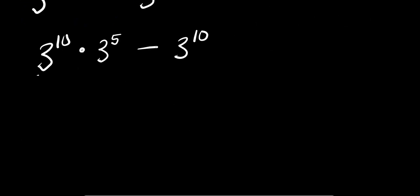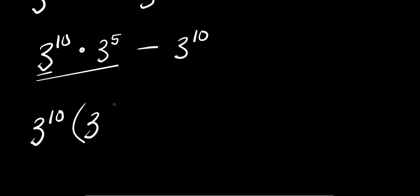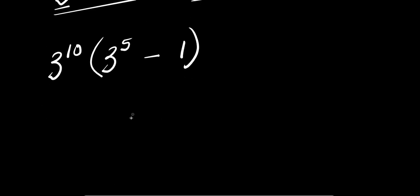So from here I can factor out 3 to the power of 10. I have 3 to the power of 10 times the quantity: 3 to the power of 5 minus 3 to the power of 10 divided by 3 to the power of 10, which gives 3 to the power of 5 minus 1.